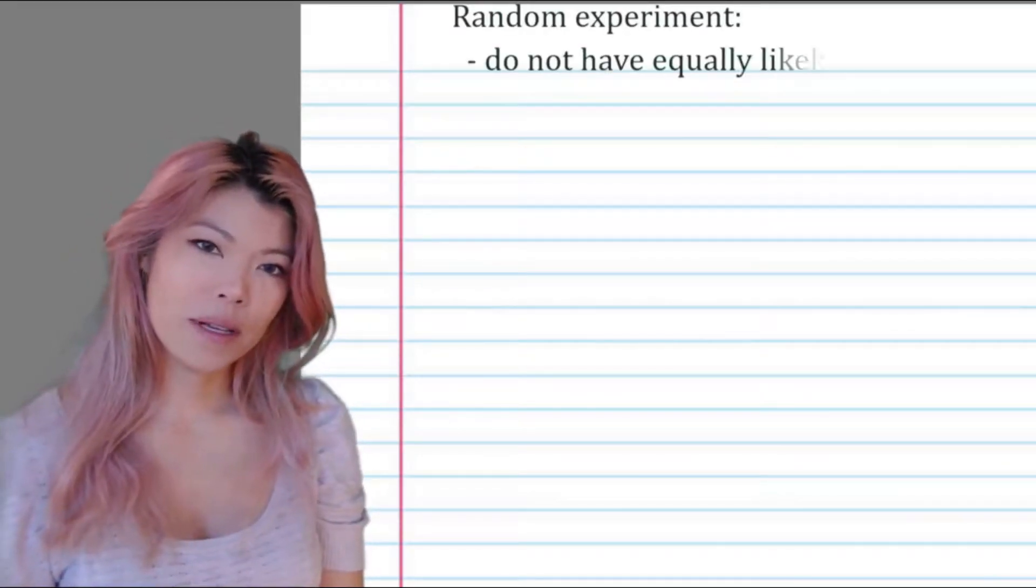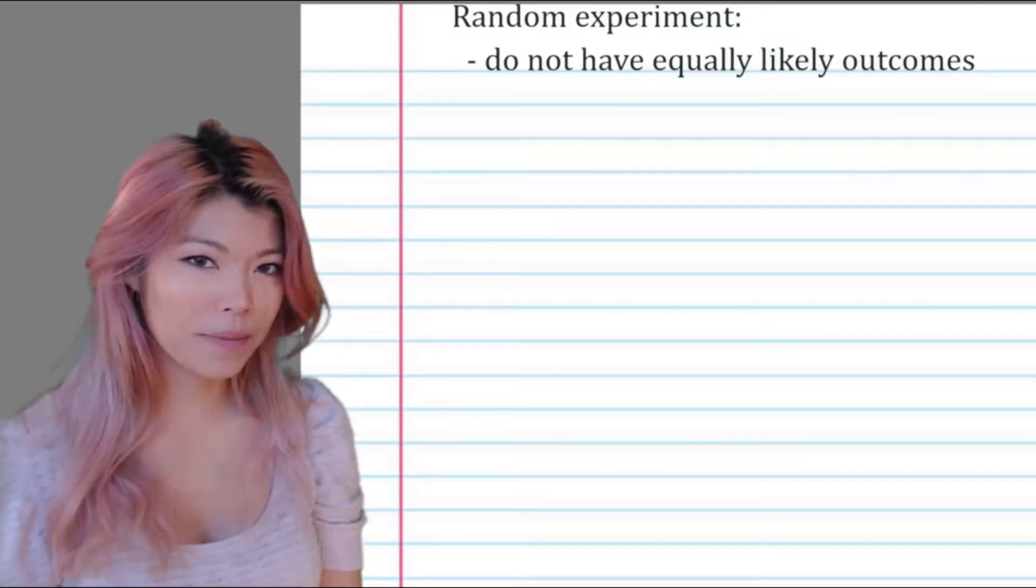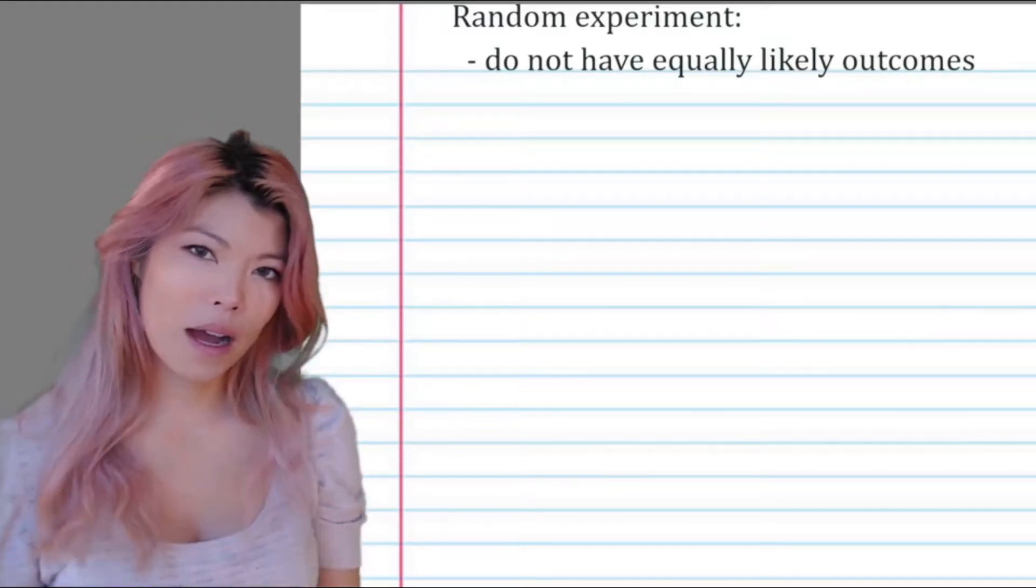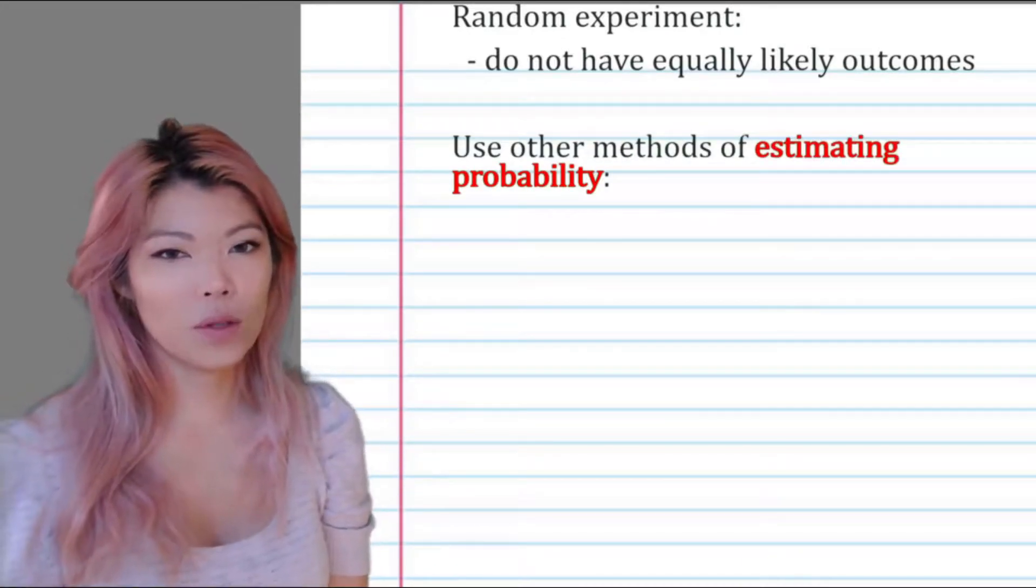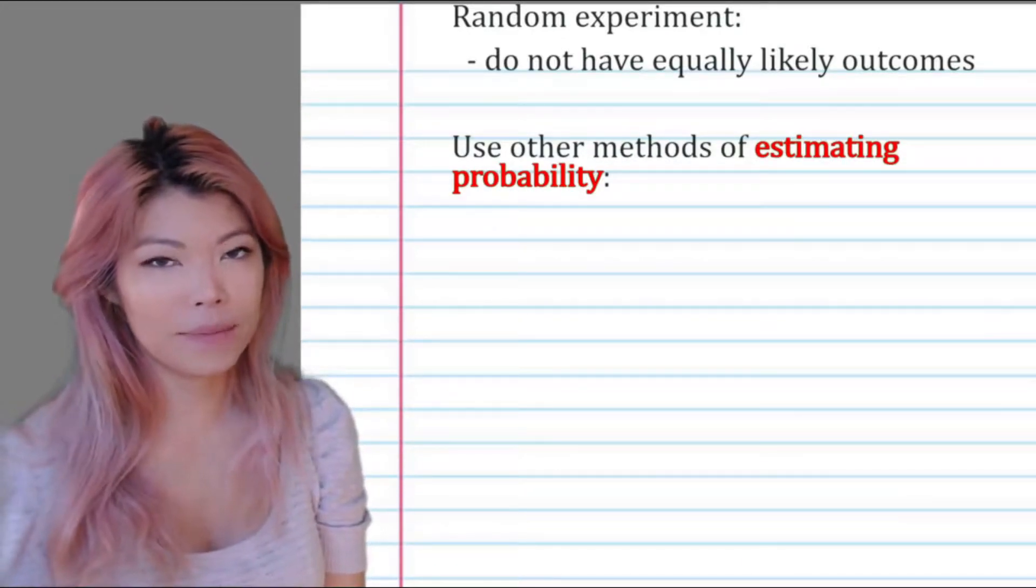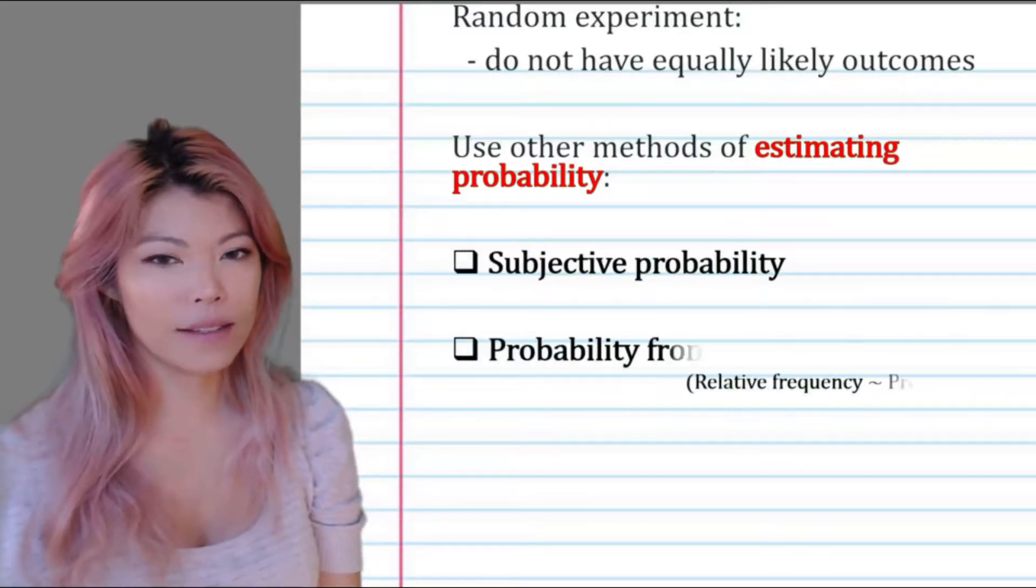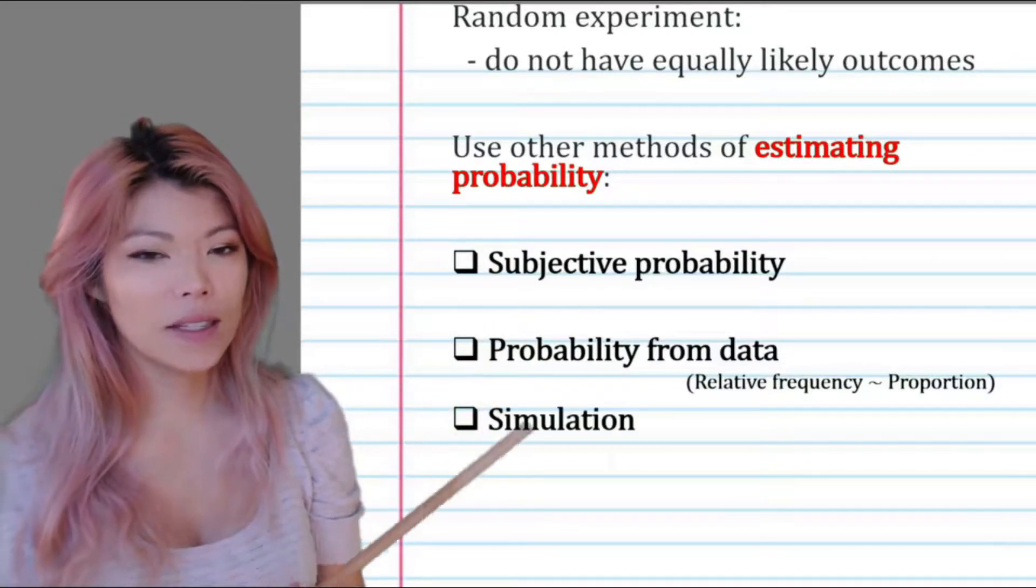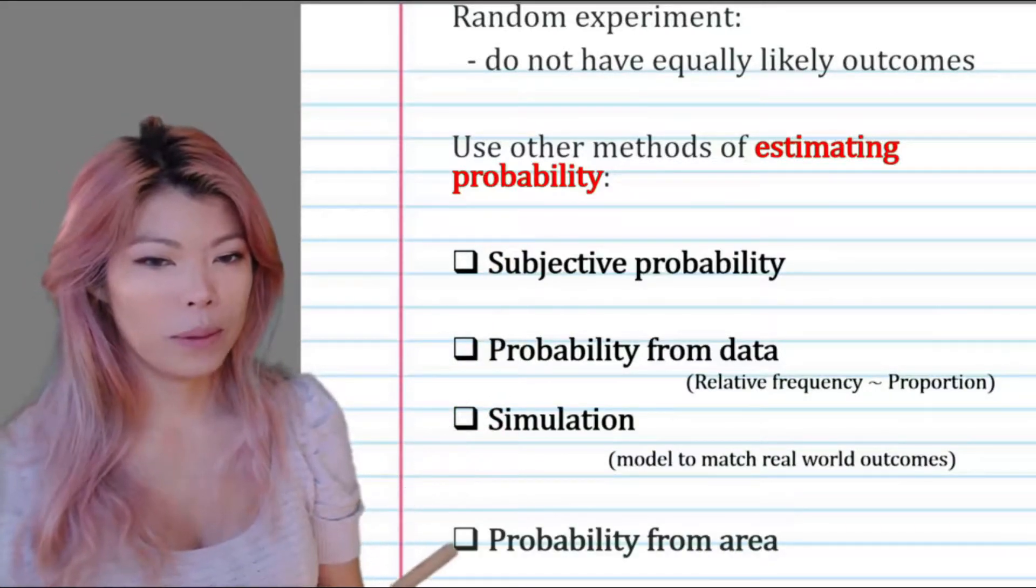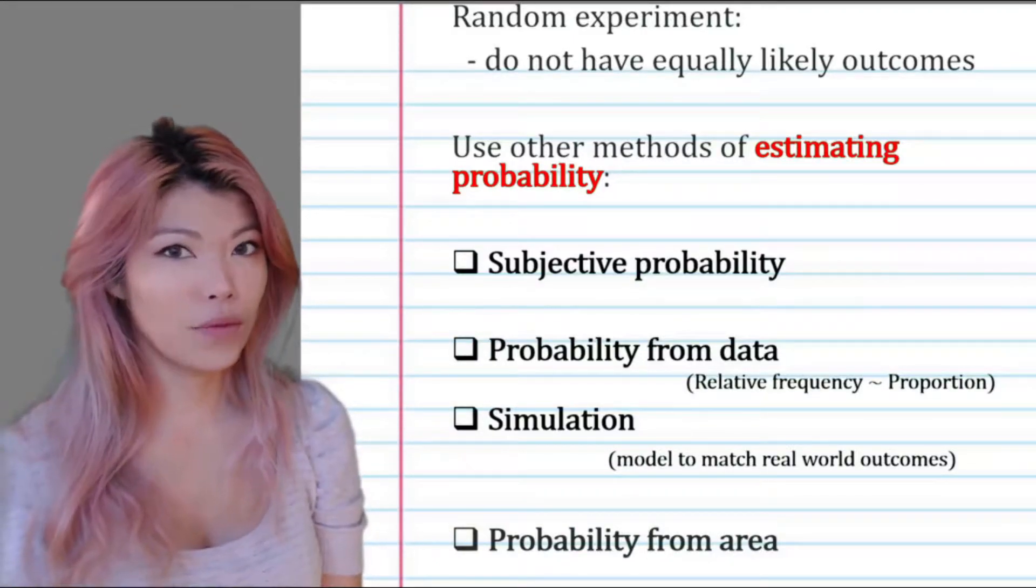Sometimes when we do a random experiment, the outcomes don't have the same probability. The outcomes might be biased or uneven. When that happens, we can estimate the probability. We can do this in four ways: subjective probability, probability from data, simulation, or probability from area. We're going to look at each of these in this video.